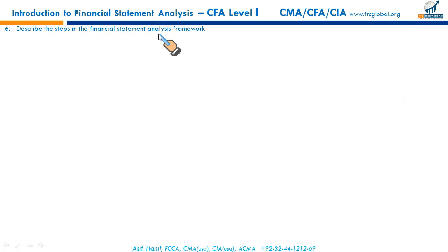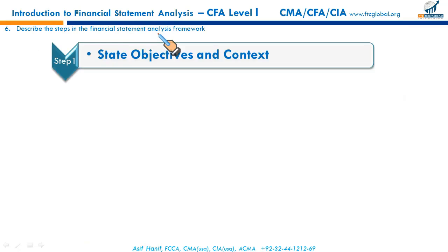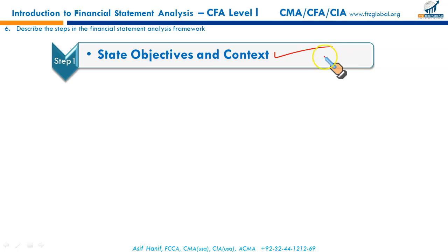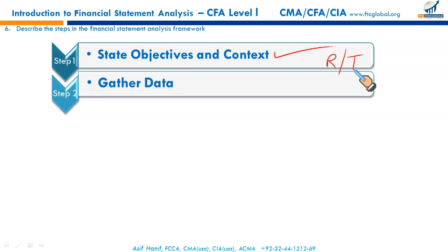The last LOS describes the steps in the financial statement analysis framework. The first step is to state objectives and context — why you want to conduct a financial statement analysis, what questions you seek answers to, what information is required, and what resources (monetary and time) are available. The second step is to gather data from financial statements, the EDGAR system, the financial press, industry averages, overall economic conditions, and possibly visits to company sites or discussions with lawyers, customers, and suppliers.